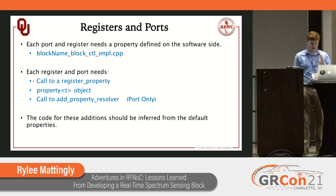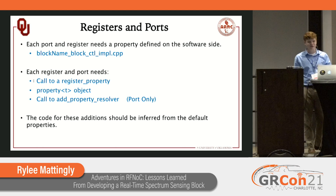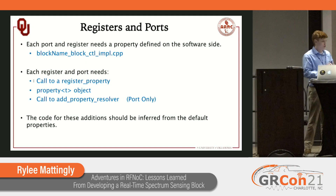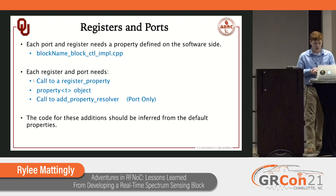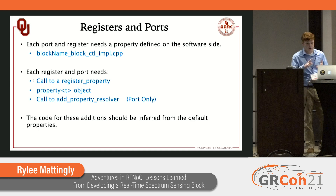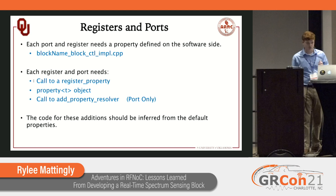Now we can move to the software side. These are the things we had to add for each new register and each new port to make them function — kind of a checklist. There's a call to a register property for each register and port, a property object that you need, and for each additional port, an add-property-resolver. Each block has a default input port, output port, and register in there, so there is example code — you just take that as your own, change your parameters, and increment port numbers and register numbers.